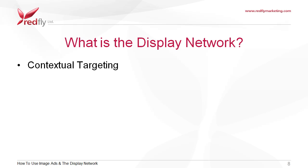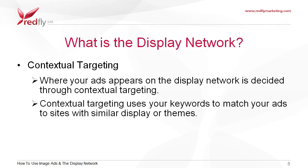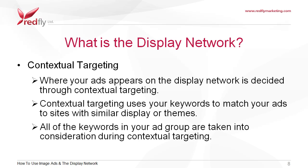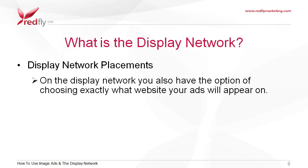Where your ad appears on the display network is decided through contextual targeting. Contextual targeting uses your keywords to match your ads to sites with similar content or themes. All of the keywords in your ad group are taken into consideration during contextual targeting. On the display network you also have the option of choosing exactly what website your ads will appear on by using display network placements.